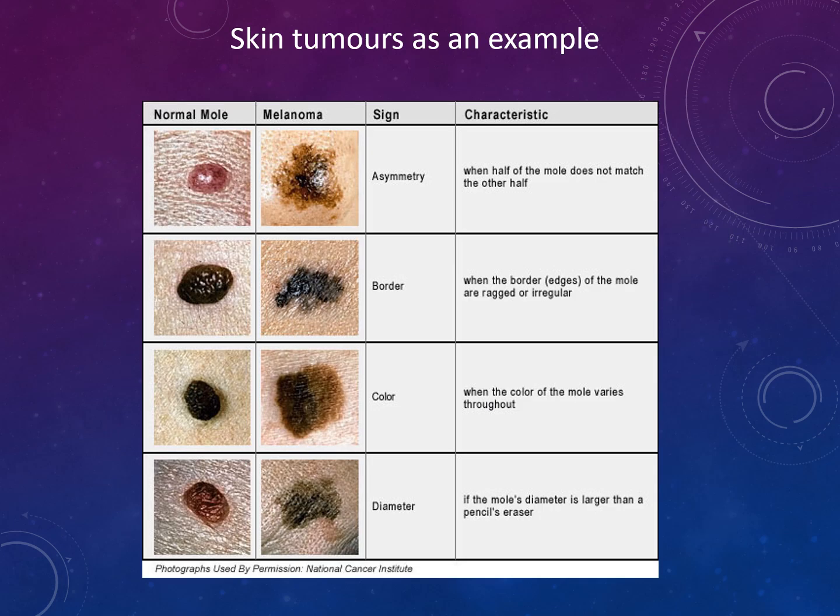Skin tumours are shown as an example. You can see the normal mole versus melanoma, and the different signs: asymmetry, colour, diameter, and border — and the characteristics of each.